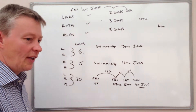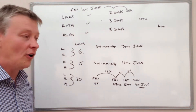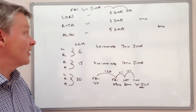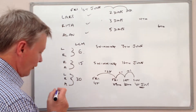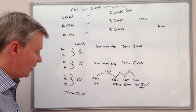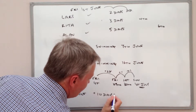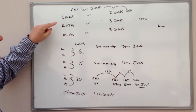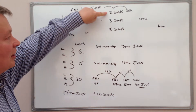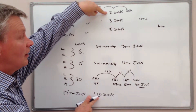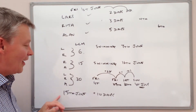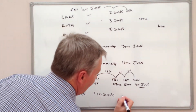The last part is: which of the three will go swimming on the 15th of June? The 15th of June is 14 days past the 1st of June. Out of all three swimmers — Lars, Rita and Alan — the only person that would go swimming on the 15th of June would be Lars, because 14 is a multiple of 2. 14 isn't a multiple of 3 or 5, so the only person who could go swimming on the 15th of June will be Lars.